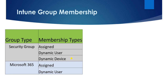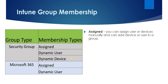Let's understand the membership types. We have two types of groups: security group and Office 365 group. A security group supports assigned, dynamic user, and dynamic device membership. Office 365 supports only assigned and dynamic users.